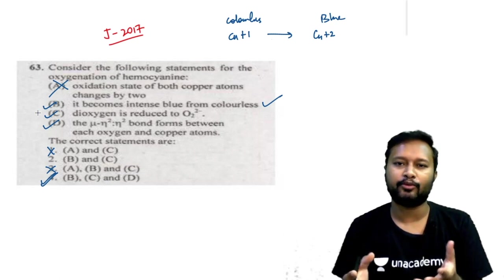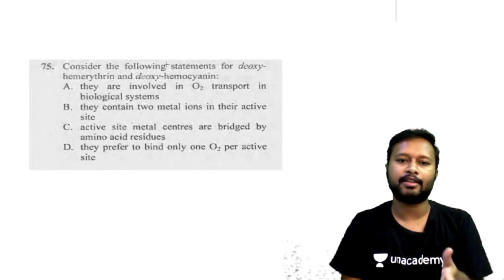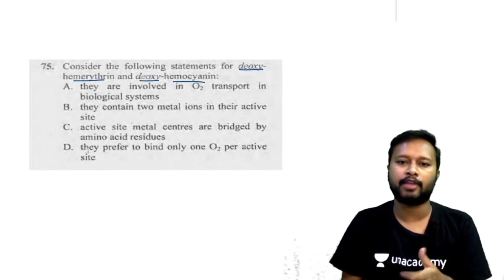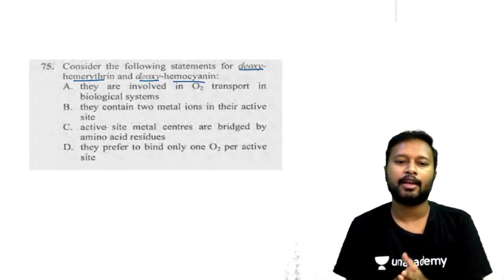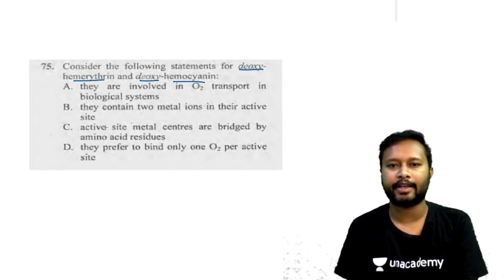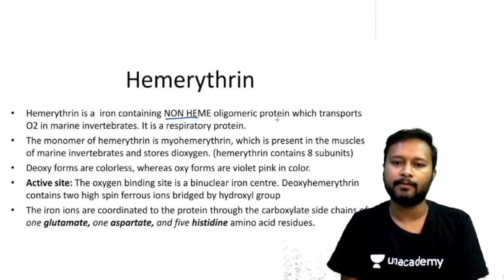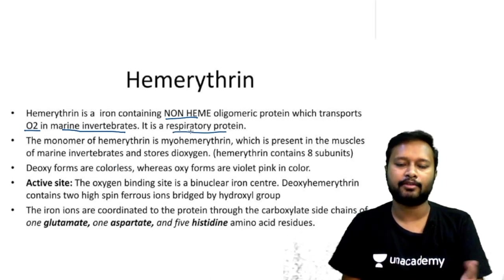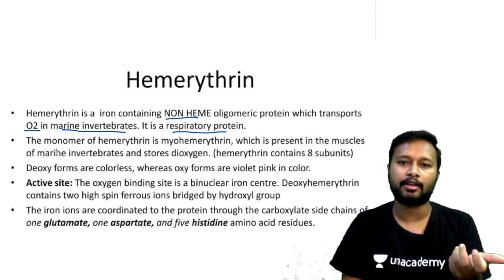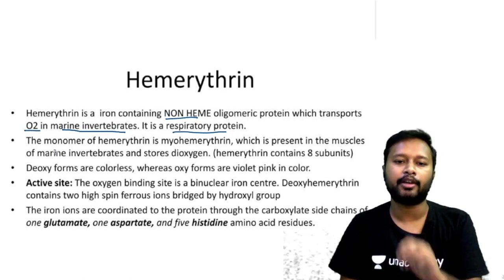Now hemerythrin: the question asks about deoxy-hemerythrin and deoxy-hemocyanin. Hemerythrin is an iron-containing non-heme oligomeric protein that transports oxygen in marine invertebrates. The monomer, myohemerythrin, is present in muscle and stores dioxygen — analogous to how myoglobin stores oxygen in mammals while hemoglobin transports it.